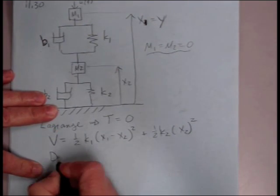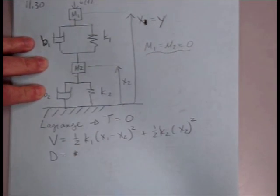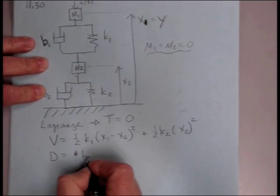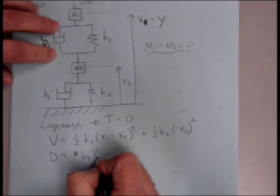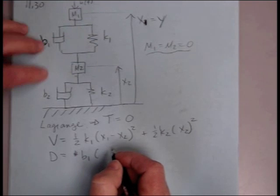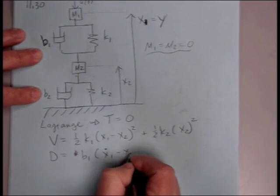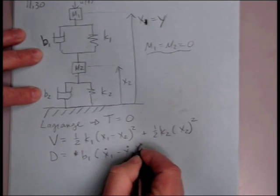Okay, similarly, for our dissipation terms from our dampers, we don't need a half here. We have b1, and it's going to be proportional to the speed of its displacement squared, so it's going to be x1 dot minus x2 dot squared.